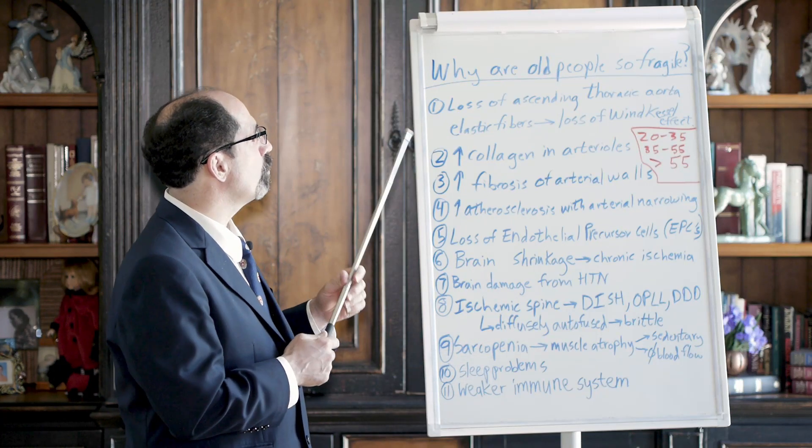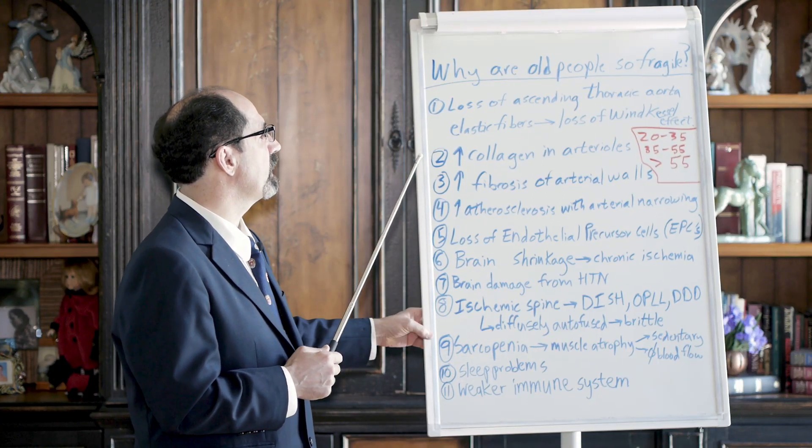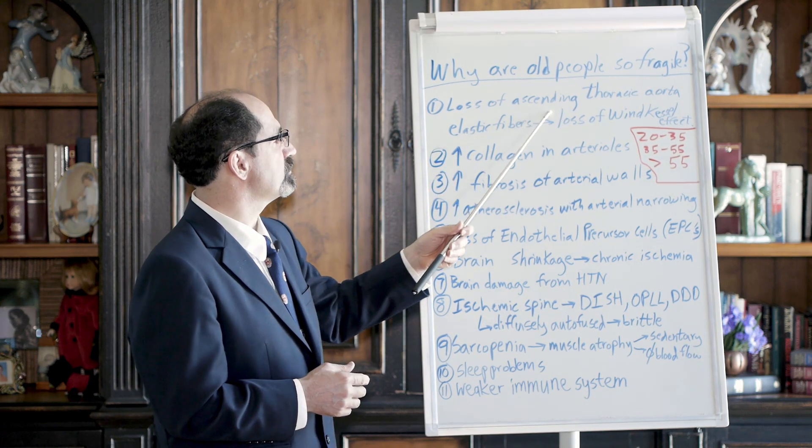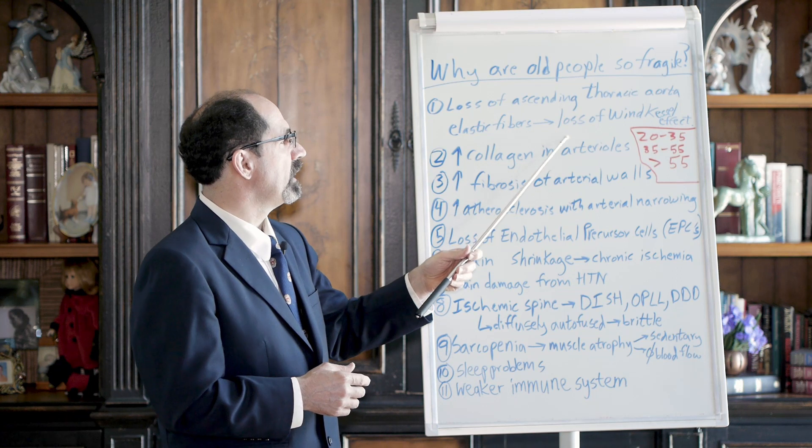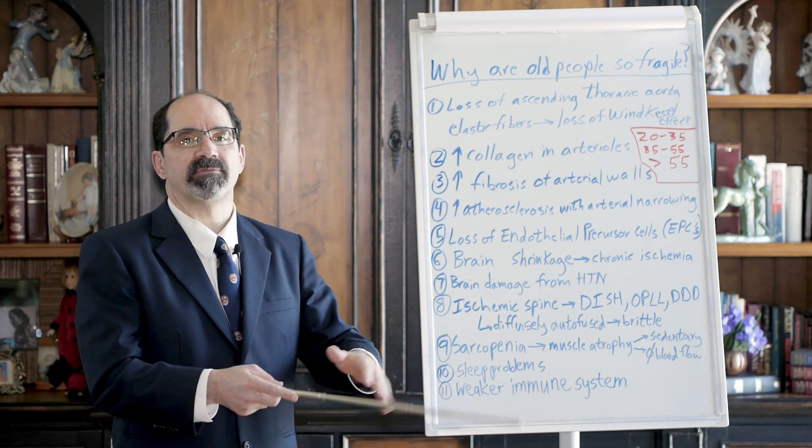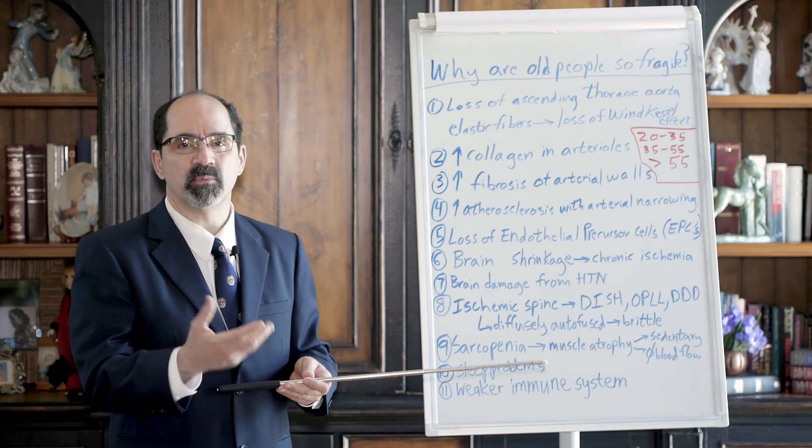We're going to talk about why are old people so fragile. First thing is that they lose the elastic fibers in their ascending thoracic aorta and they lose the wind kessel effect. A wind kessel is like that device you blow air on a fireplace to get the kindle wood going.